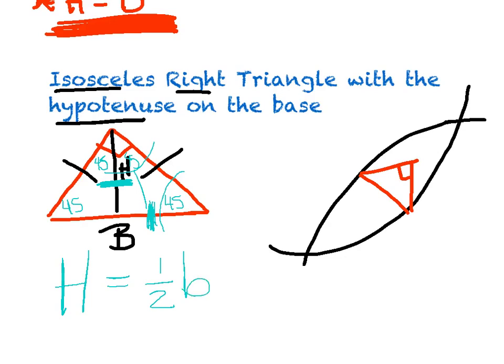That's a pretty big deal — let me just replay that. If each of these angles are 45 degrees, the opposite sides are equal. Since this is the whole base, the height is equal to half of it. That's where I'm getting this formula: height equals half the base. And that's going to be the rule for any time the hypotenuse is sitting on the base.